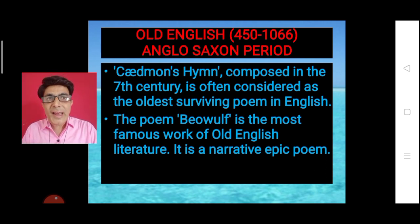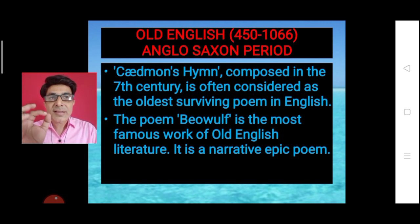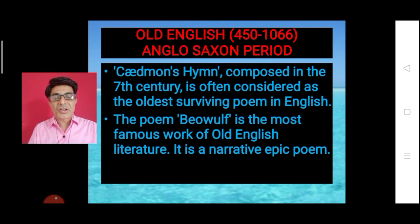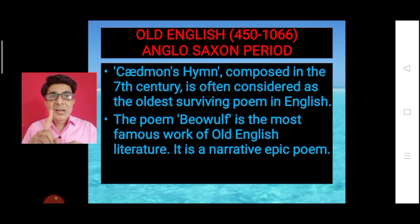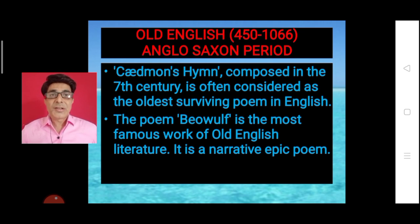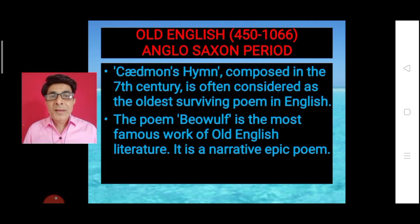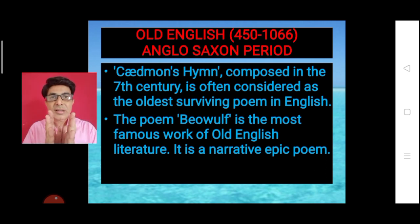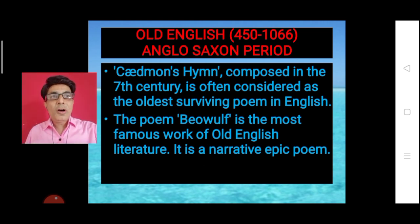It is believed that Caedmon's Hymn, composed during the 7th century, is considered as the oldest surviving poem in English literature. Remember this title — Caedmon's Hymn — considered as the first written poem in English language. At the same time, the epic poem Beowulf is also famous — an important work of this Old English period, written in the Old English language as a narrative poem. These two works are considered as the early works of English literature.